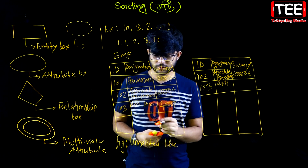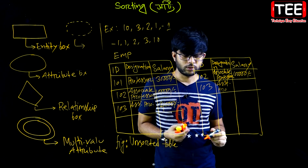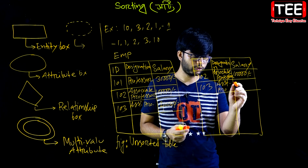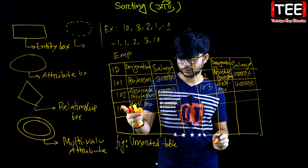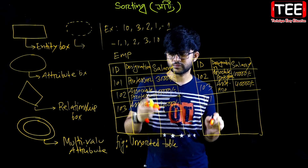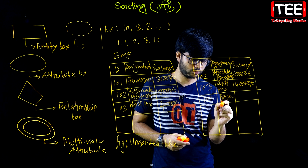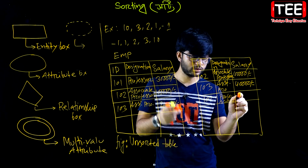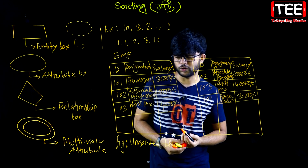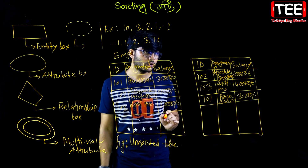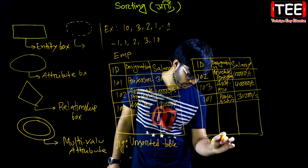Assistant professor, professor — I will give my salary. I will give him a salary amount. This is the sorted table. Sorted data table — sorted.